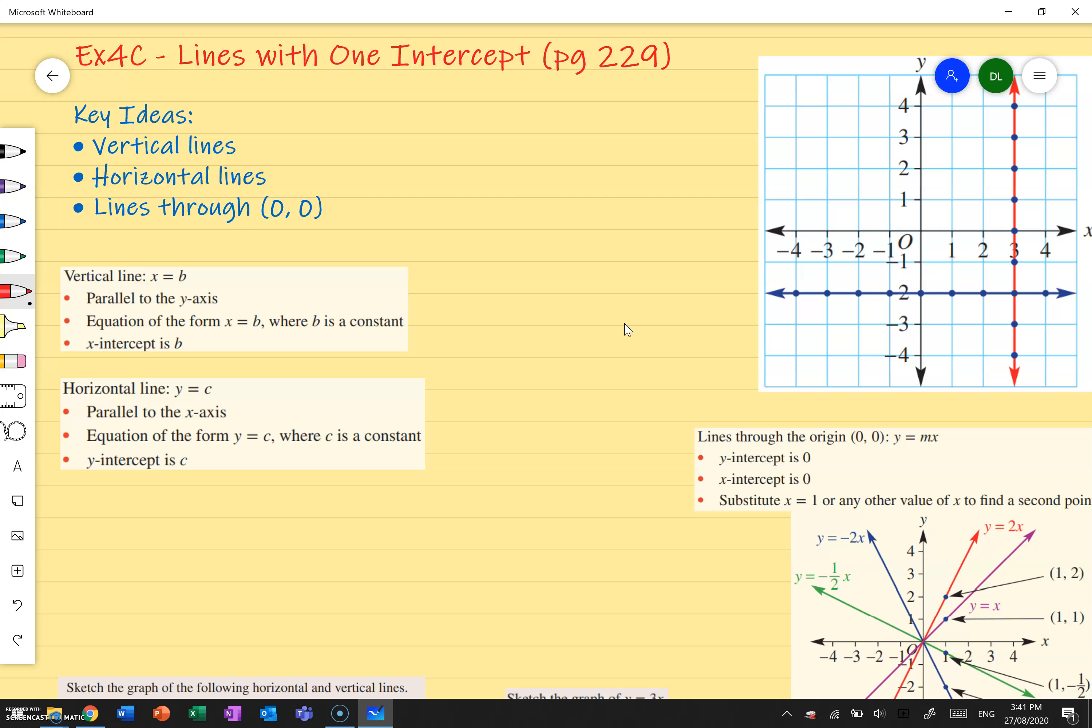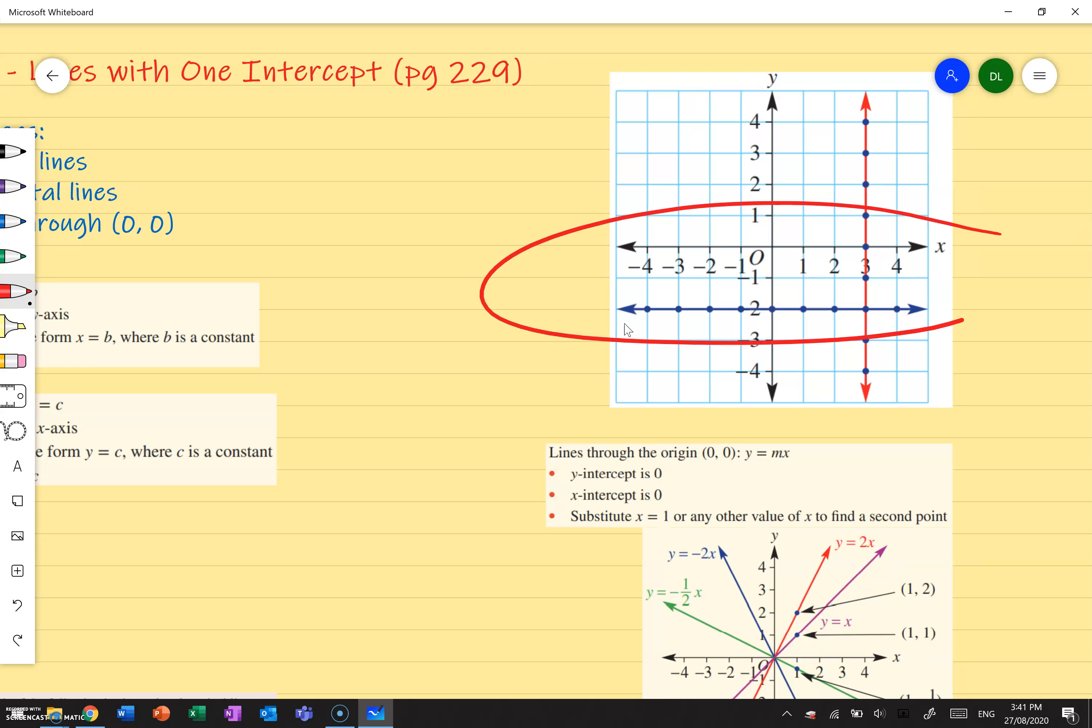So our three key ideas for today: vertical lines, horizontal lines, and lines that pass through the origin or in other words the zero zero coordinate. Just a reminder that this is our x-axis that goes across and then our y-axis that goes from top to bottom.